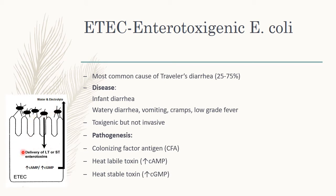To summarize the ETEC toxin mechanism: LT (heat-labile toxin) and ST (heat-stable toxin) are delivered to the intestinal cells. LT increases cyclic AMP and ST increases cyclic GMP, and both cyclic AMP and cyclic GMP together increase the outflow of water and electrolytes into the gut lumen, resulting in diarrhea.